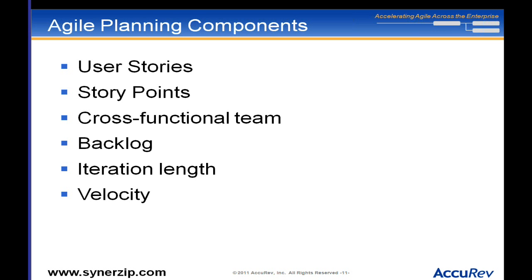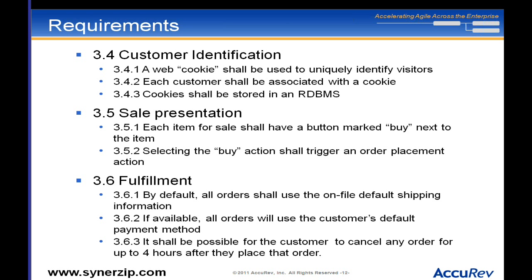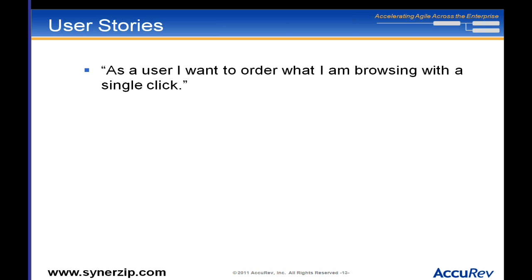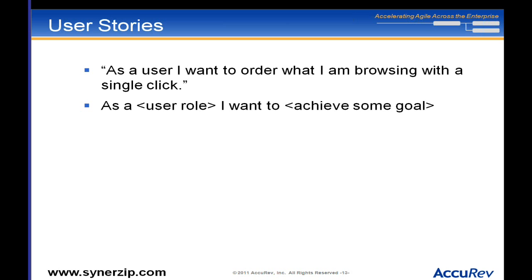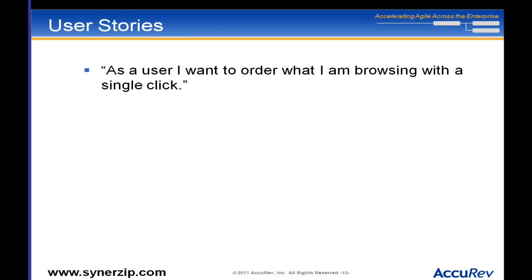A user story is a single English phrase — for example, 'As a user I want to order what I am browsing with a single click.' In general, a user story is of the form: 'As a [user role], I want to [achieve some goal].' In agile we do this because it's really easy to quickly glance at a story and say, 'I know what that is.' We're going to assign a cost and a value to this — it's our basic unit of work.